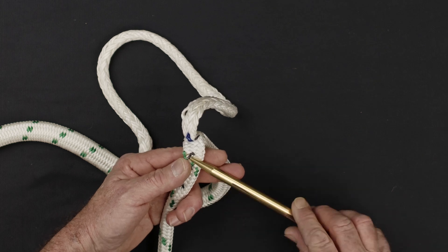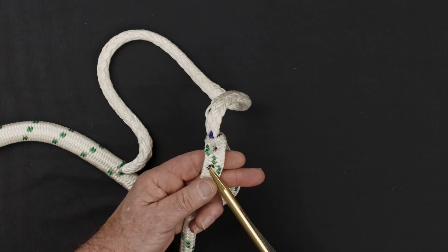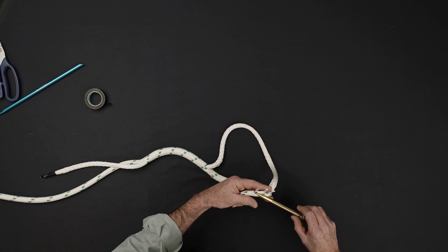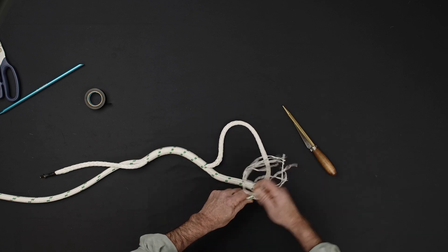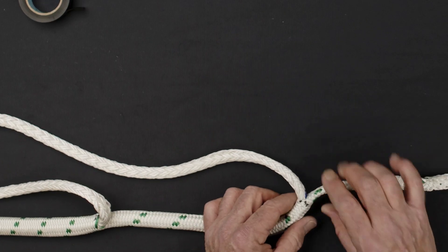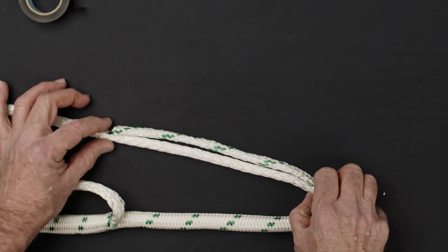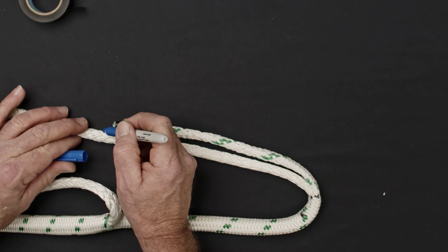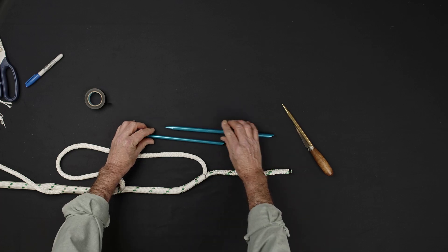Using a taper tool or a pair of scissors, carefully cut and remove the taper pattern from the sleeve of the rope. Lay the core and the sleeve tail next to each other and indicate the approximate location where the sleeve will exit the core.